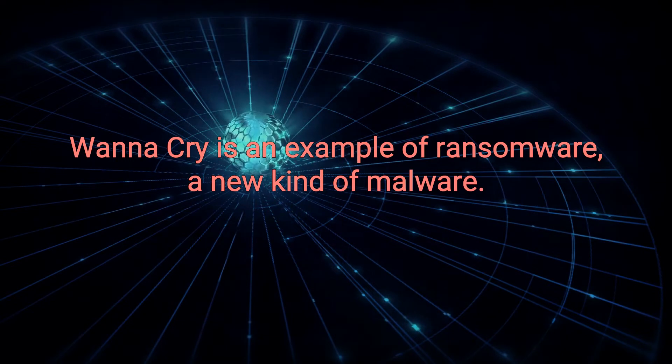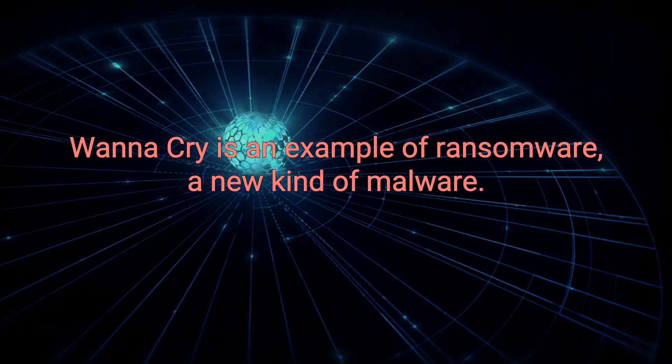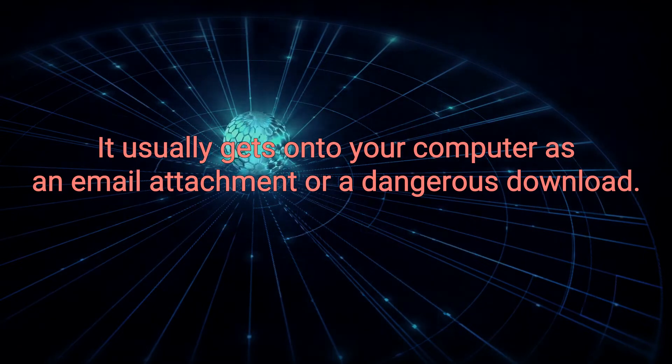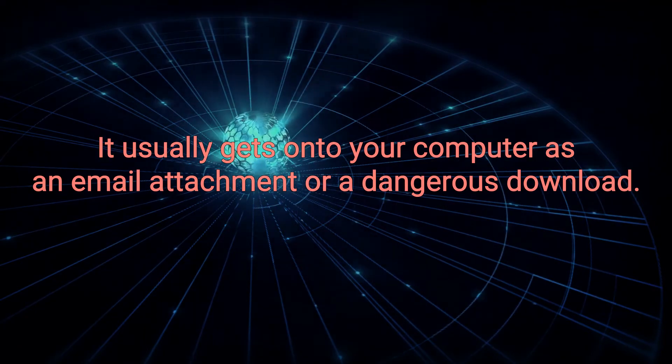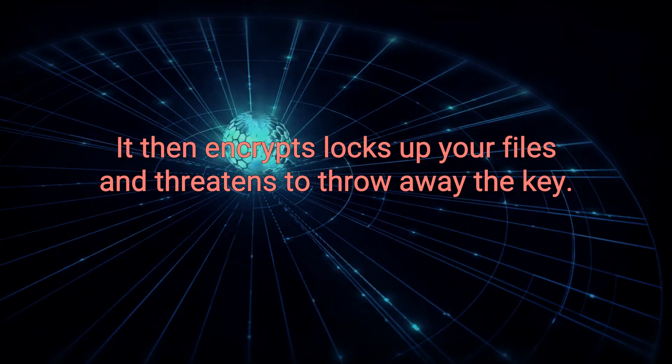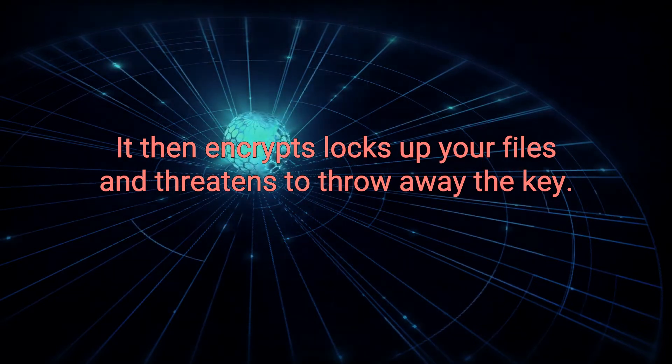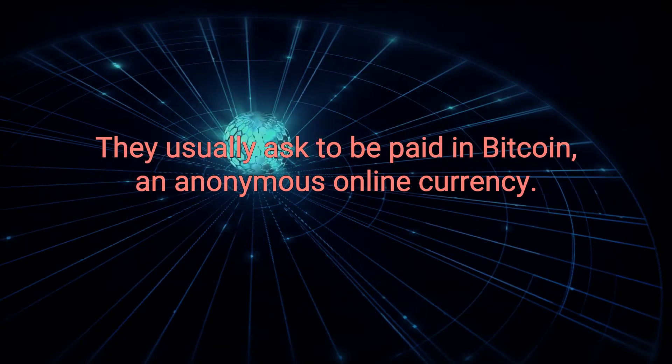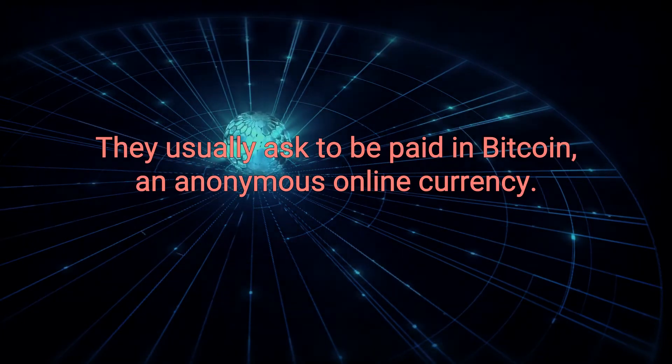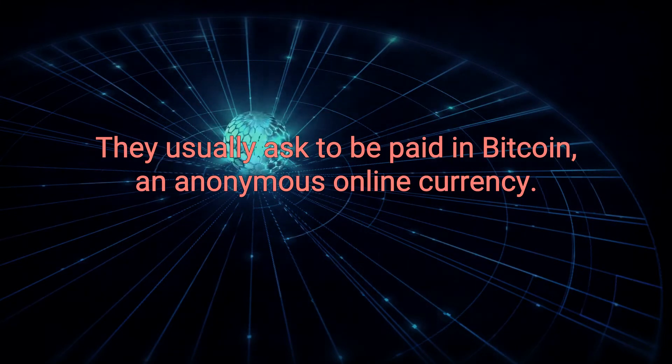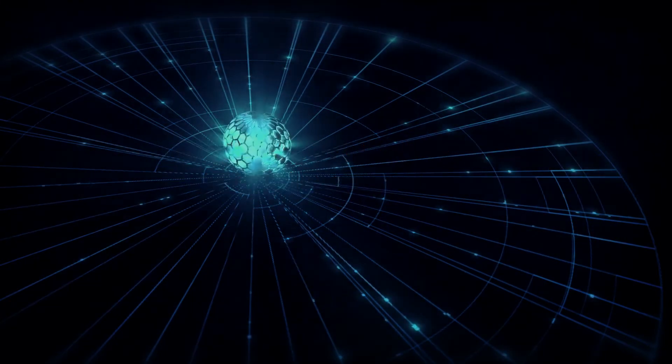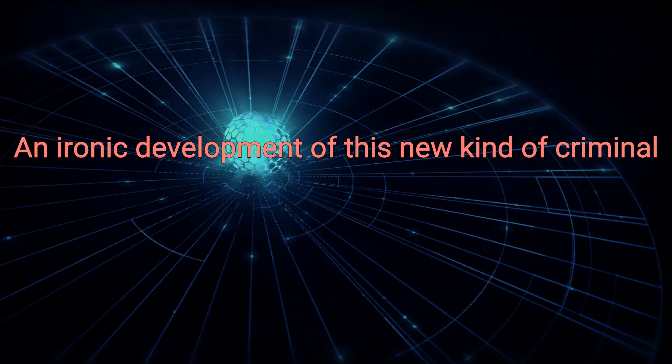WannaCry is an example of ransomware, a new kind of malware. It usually gets onto your computer as an email attachment or a dangerous download. It then encrypts, locks up, your files, and threatens to throw away the key, unless you pay the criminals who sent you the malware. They usually ask to be paid in Bitcoin, an anonymous online currency. Then they hand over the key to decrypt your files again.